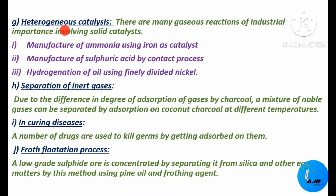The next important application is heterogeneous catalysis. There are many gaseous reactions of industrial importance involving solid catalysts. The adsorption of reactants on solid surfaces of the catalyst increases the rate of reaction. Examples include the manufacture of ammonia using iron as catalyst, manufacture of sulfuric acid by the contact process, and hydrogenation of oil using finely divided nickel. All these are excellent examples of heterogeneous catalysis, which takes place by the adsorption technique.